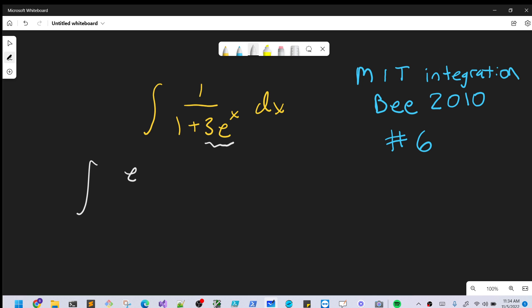If we do that, we'll have e^(-x) in the numerator. In the denominator we'll have e^(-x) plus 3, and then e^(-x) times e^x cancels to just 1.